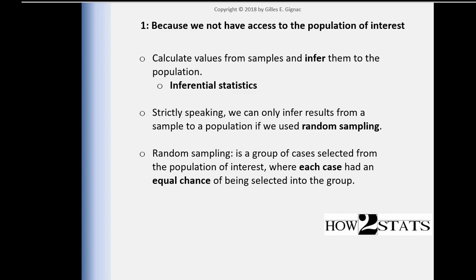Think for a minute what that actually means: each case in the population of interest had an equal chance of being selected into that sample. For example, if you consider a study that wants to evaluate whether attending lectures is associated with greater performance on the final exam for university students, I would actually need to randomly sample in such a way that each student in the entire world has an equal chance of being selected into that sample.